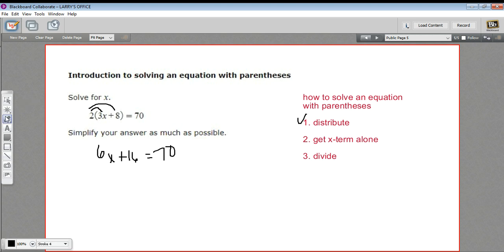Now, we want to get the x term alone. We've got two terms here: 6x, that's what I'm calling the x term, and then this 16, that's a number or a constant term. So these are two different terms. I want to get rid of the 16, so the x term is by itself.